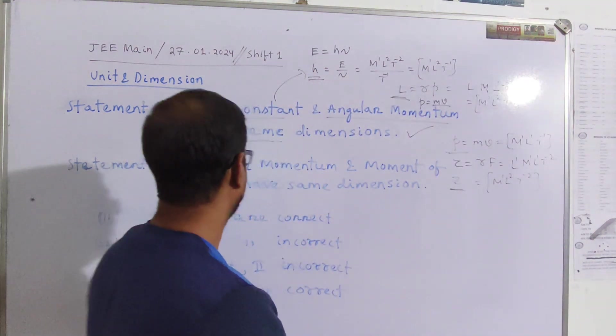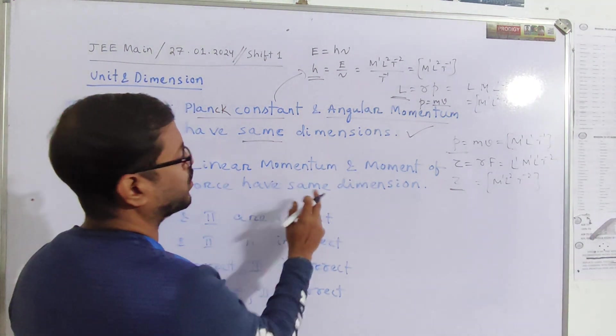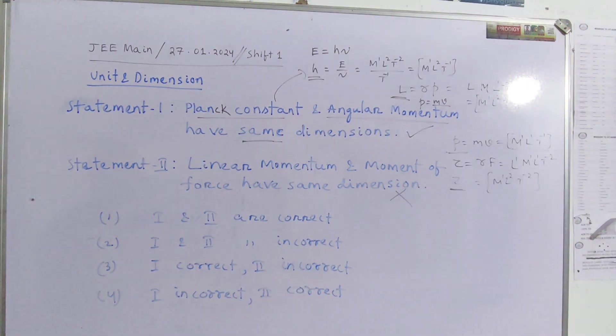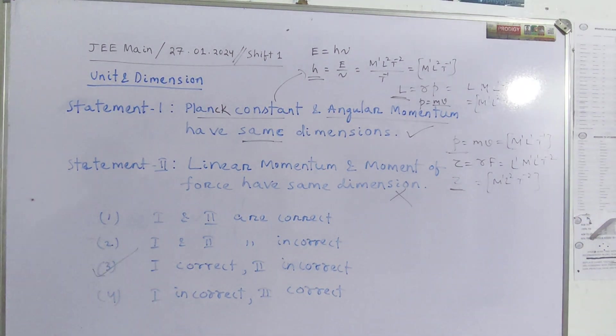So it is clear that linear momentum's dimensional formula is M1 L1 T minus 1, whereas torque's dimensional formula is M1 L2 T minus 2. So they are not same. So the statement 2 suggested that linear momentum and moment of force have same dimension, no, this is a wrong statement. So 1 is correct and 2 is incorrect, so for this question choice is 3.